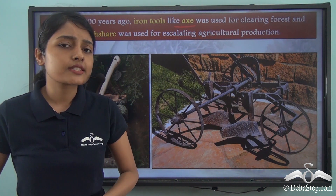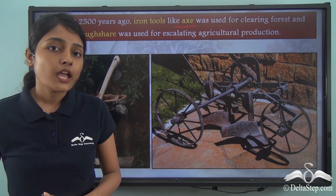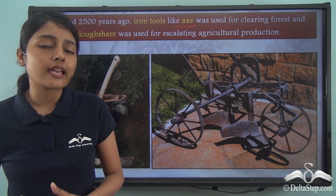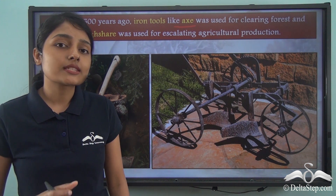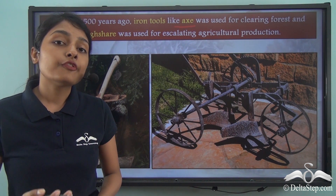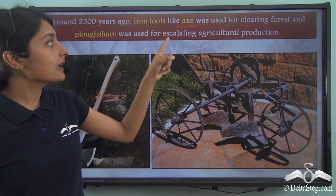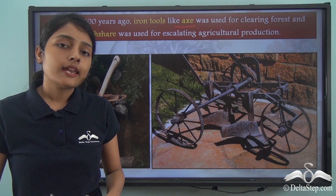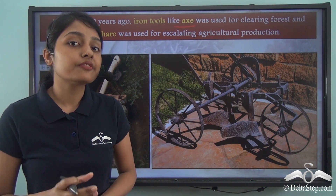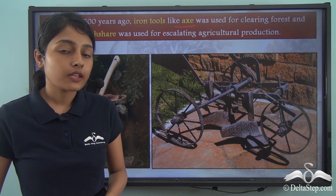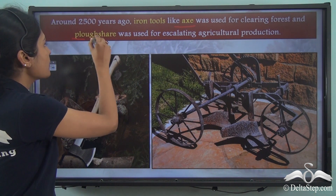The axe was used for the clearing of forests. This was important because earlier most places were densely forested regions. But when settlements started giving birth to villages and population was growing, people now required more tracts of land to inhabit and for the growing population to stay. Which is why these forests had to be cleared, and iron tools like the axe were used. Now once more and more population had been housed in a region, food also needed to be taken care of. In order to increase agricultural production, the iron tool called the plowshare was used.